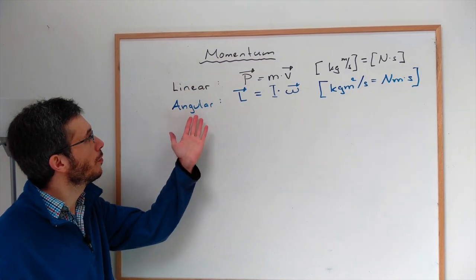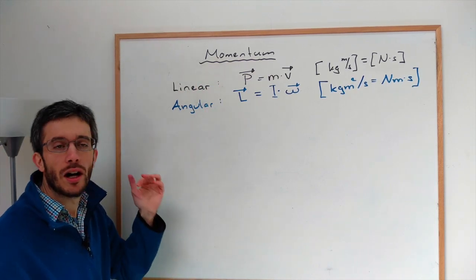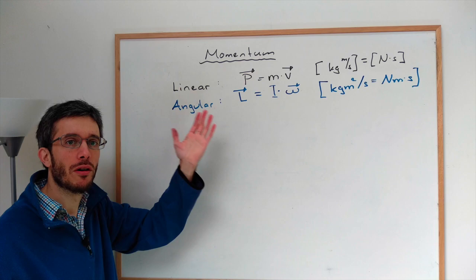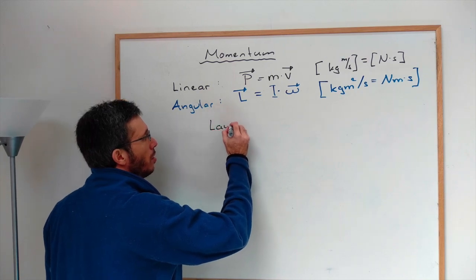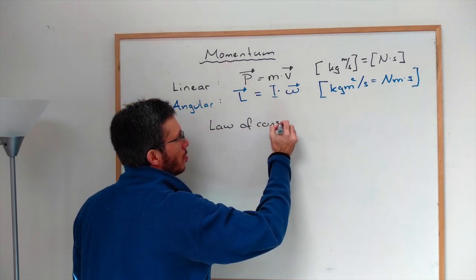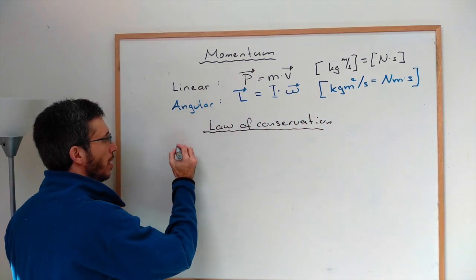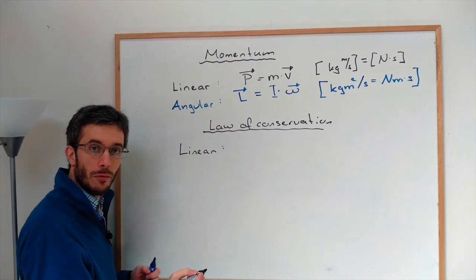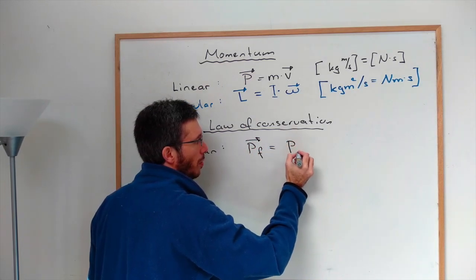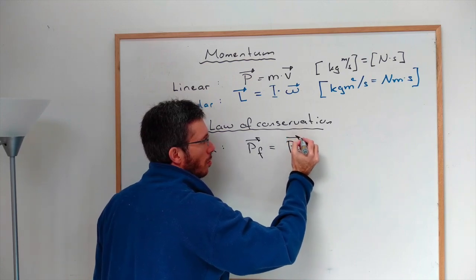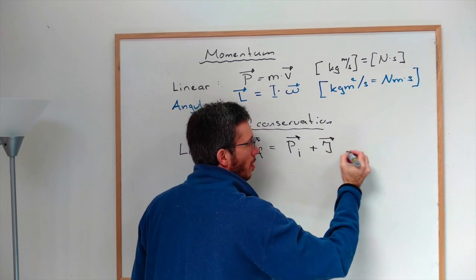Now we need to establish that angular momentum is conserved, just as linear momentum is. In the linear case, the law states that final momentum equals initial momentum plus the change, which we call the impulse. And impulse equals force times time.